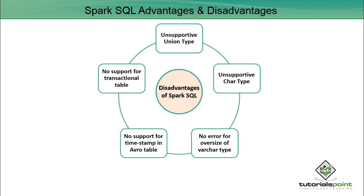Unsupportive union type: Spark SQL does not access union fields — we cannot create or read those tables which contain union fields. Unsupportive character type: it does not support fixed-length character type data and we cannot access those tables which have that type of data.